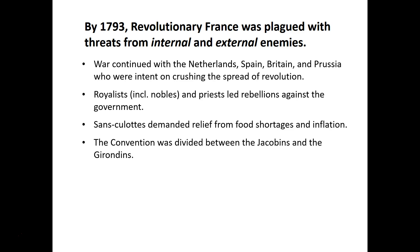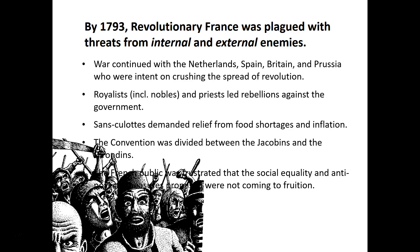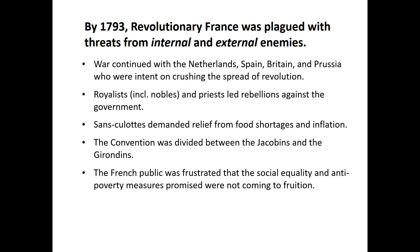The National Convention is divided even within itself. The radical Jacobins are struggling for power with the more moderate Girondins. In the larger sense, the French public was frustrated that all the promises of the Revolution — including more specific immediate needs — are not coming to fruition. We've got problems outside and inside France, both within the government and within the public. It's a chaotic situation.